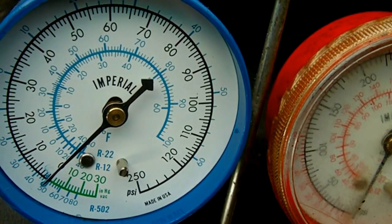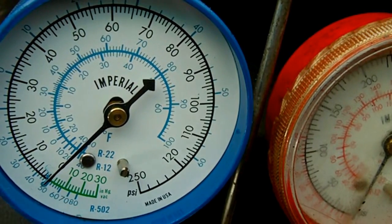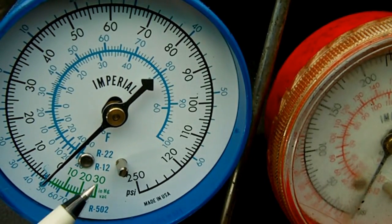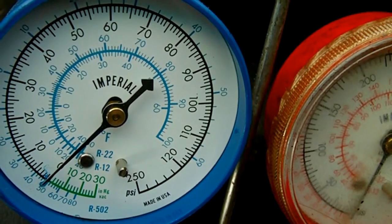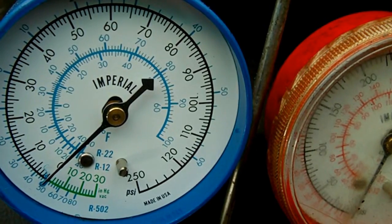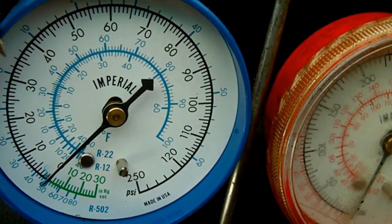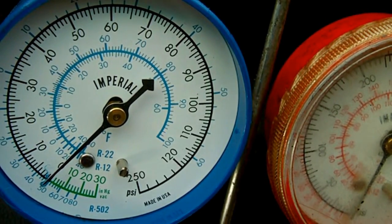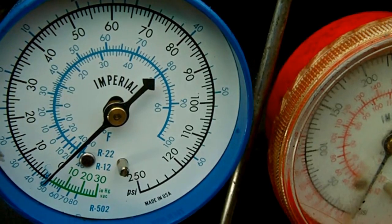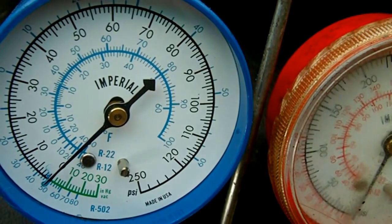The ones you get today, you pay $150 and then they leak six, seven months later. They start leaking. This one over here, like I said, I got it around 20 years ago. Still nice and green, the scale for vacuum. Pretty cool stuff.